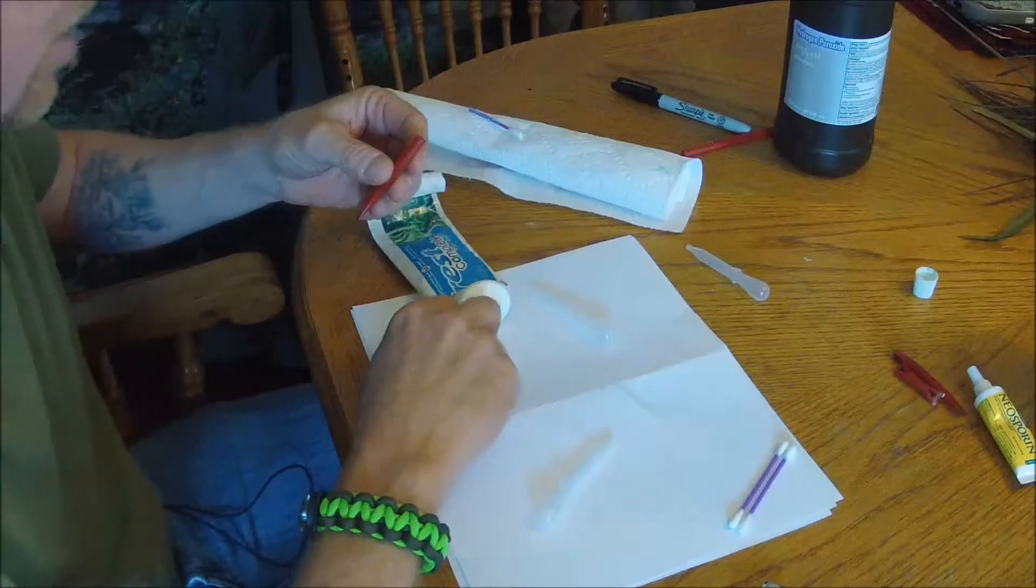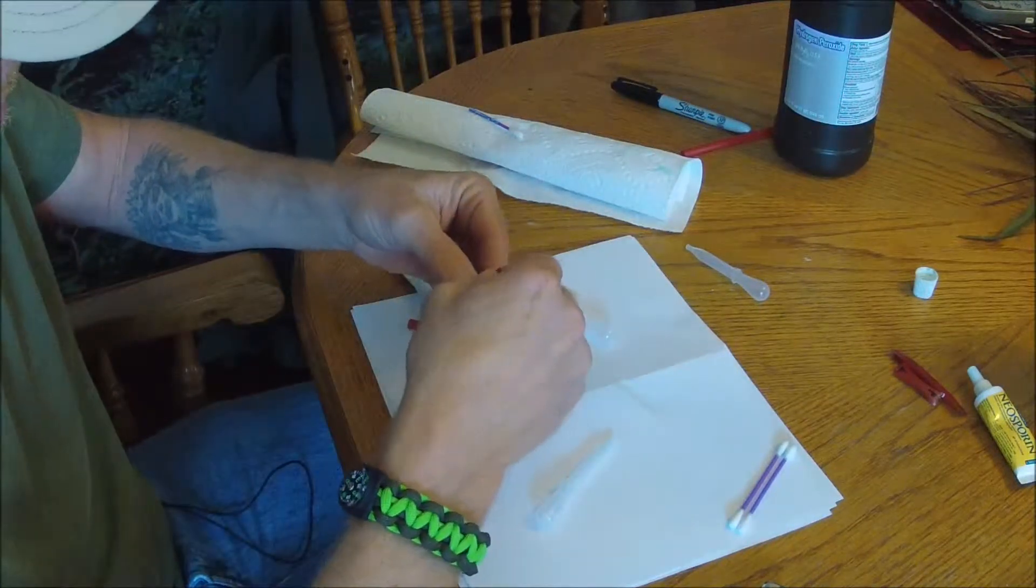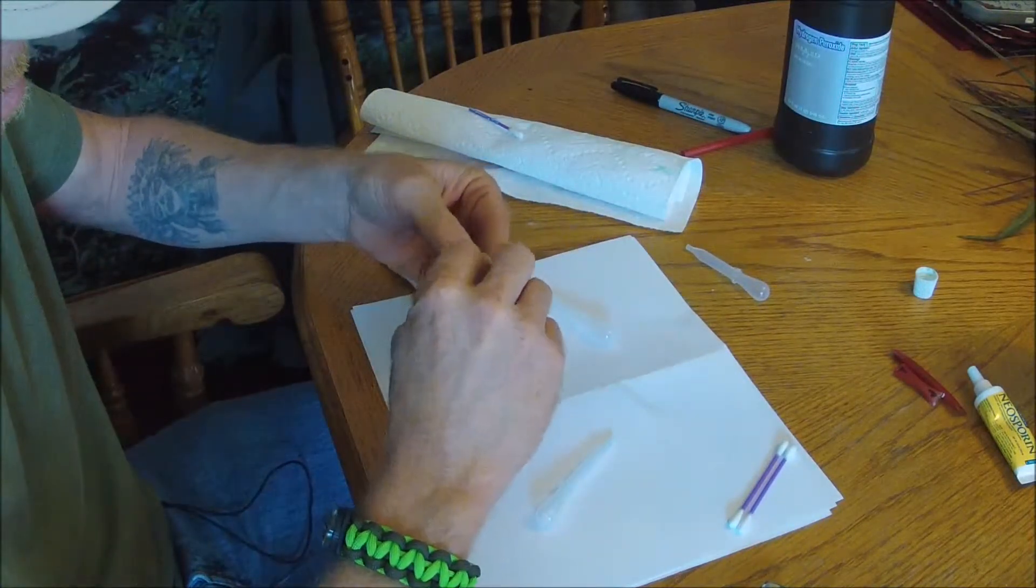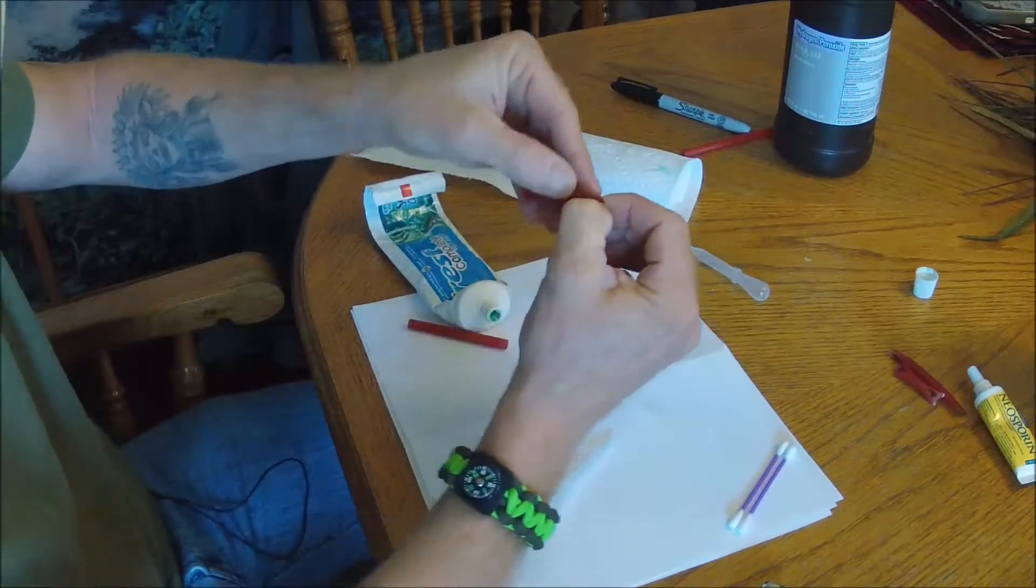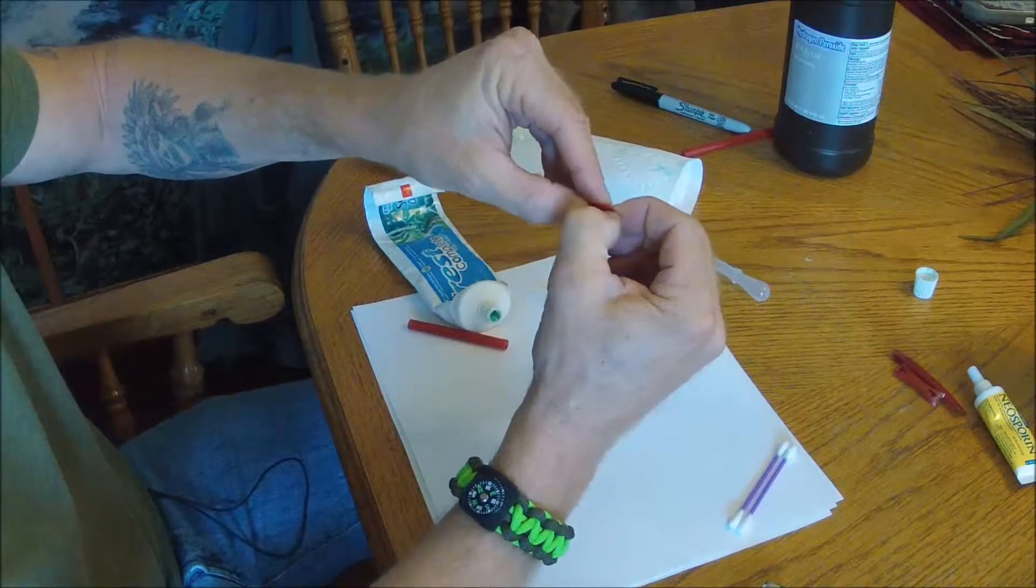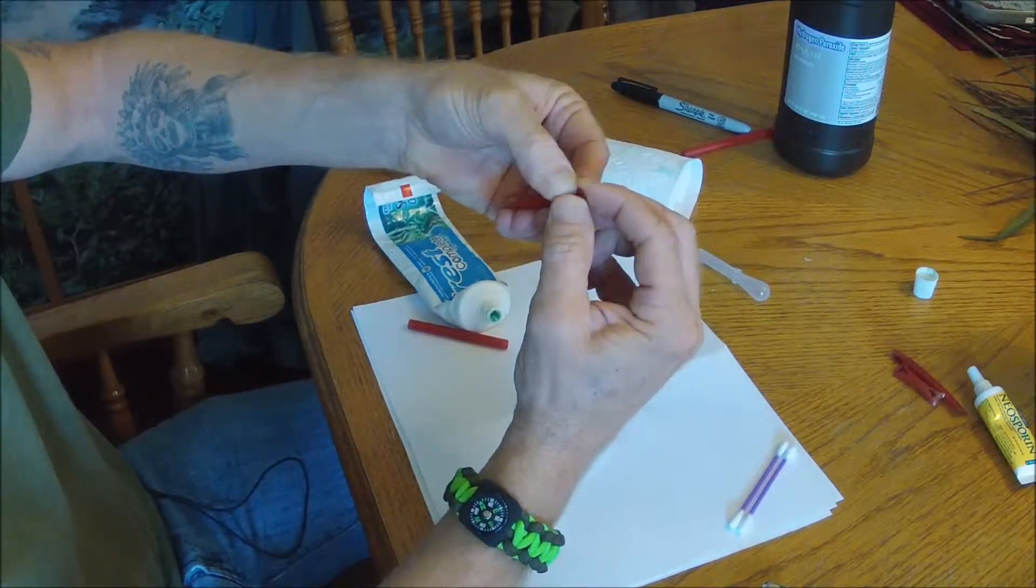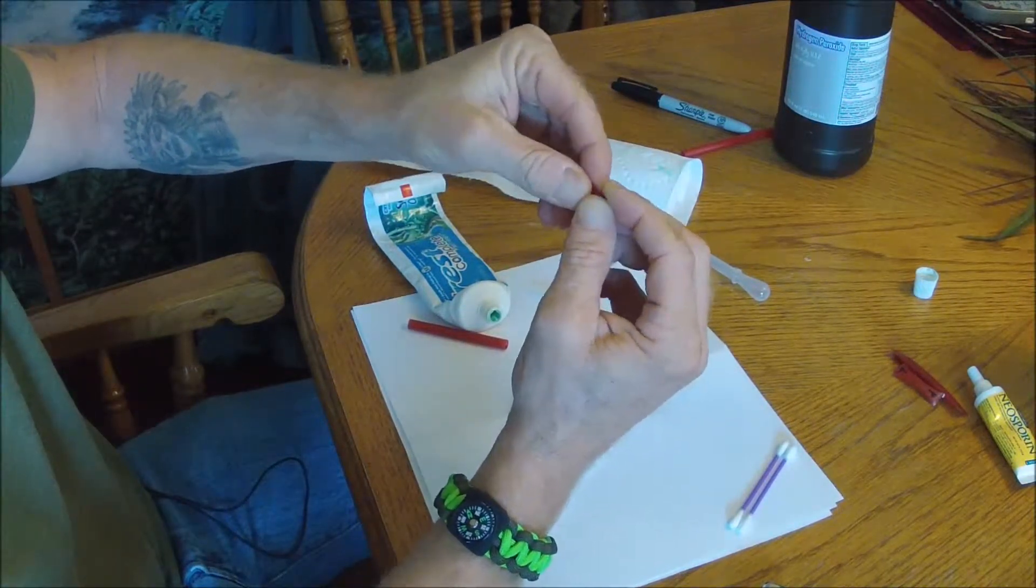Let's just get a good seal here on this end and again this is for demonstration purposes, this is assuming you've already got the toothpaste in there. Okay now what you want to do is you want to fold this over like so, create yourself a little crease there in the center okay like that okay so the end of it's gonna look something like that okay.